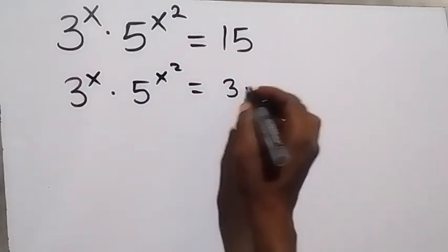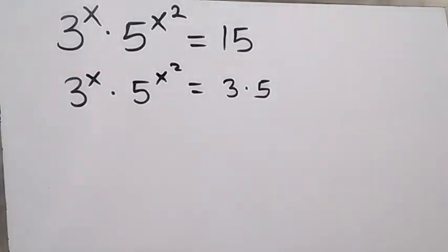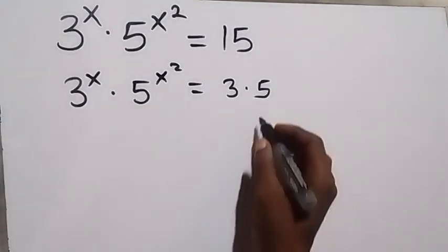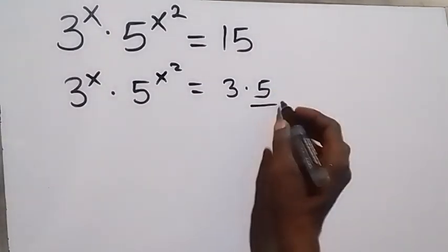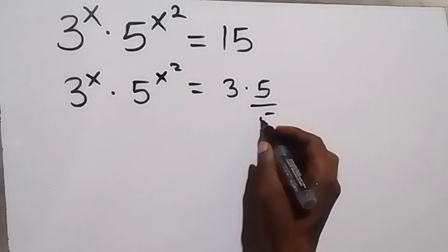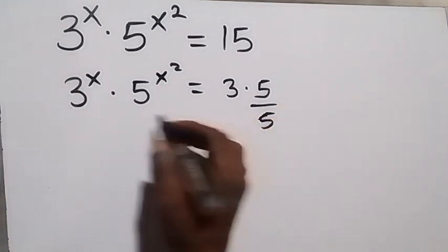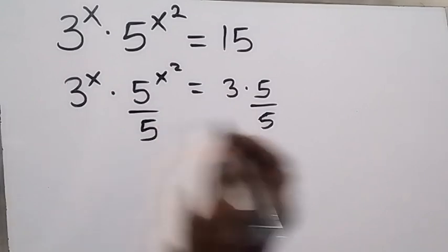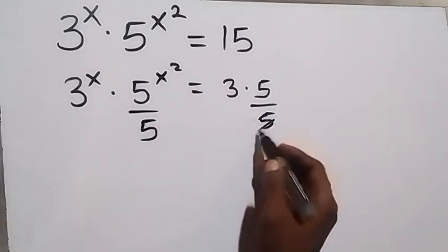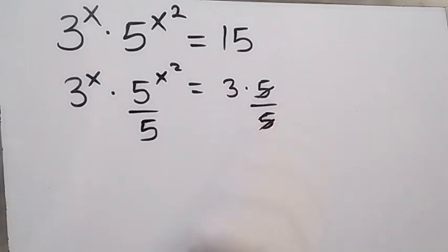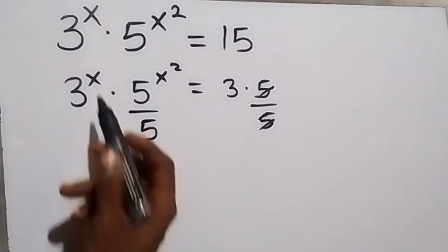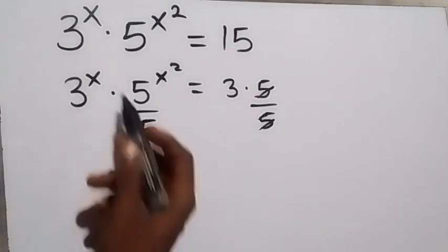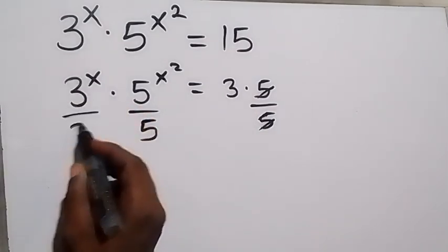We can write 15 as 3 times 5. From here we can divide both sides by 5 — dividing this side by 5 so as to remove this 5, and dividing this side by 5 as well.